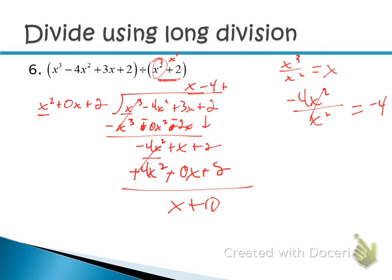The remainder is x + 10, so add (x + 10) in the numerator over x² + 2 in the denominator. When writing the solution, use the original divisor x² + 2 — you don't need those placeholder zeros anymore. So the final answer is x − 4 + (x + 10)/(x² + 2).